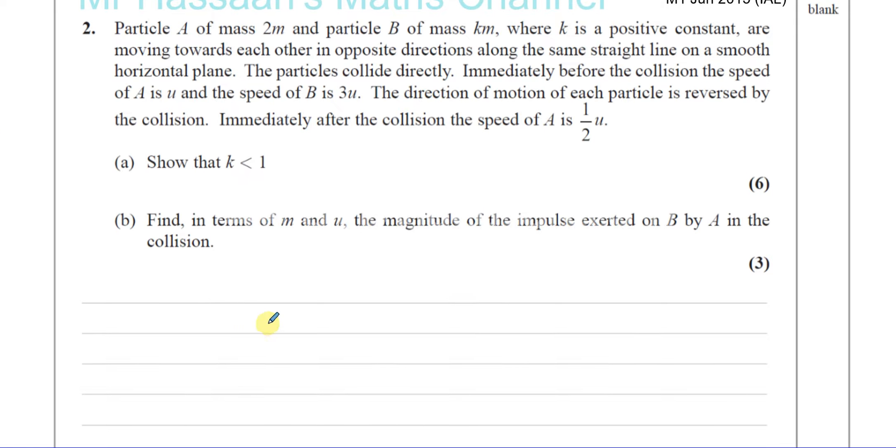Let's set this up as we normally do. It seems like a slightly different type of question, but we've got to be very careful here about putting everything in the right place. So 2M is particle A and particle B is KM.